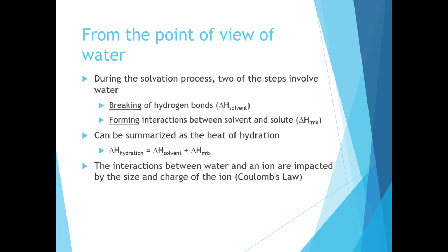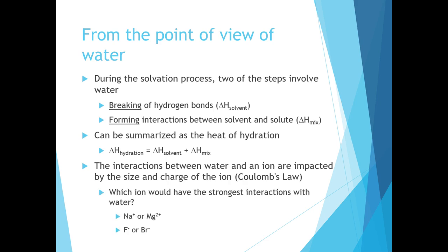The interactions between water and the ion are impacted by a variety of things, but mostly the size and the charge of the ion — you may recall Coulomb's law and its relation to the ionic bond. Now we wonder which ion would have the strongest interactions with water. Our first set contains two cations, sodium and magnesium. Due to the additional positive charge of magnesium, it has a greater charge overall, meaning a stronger interaction between the magnesium ion and the water molecule. So when we have two ions, one with charge +1 and one with charge +2, the one with a larger charge will have a stronger interaction with water.